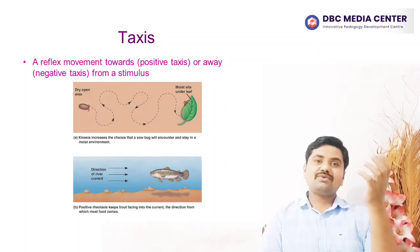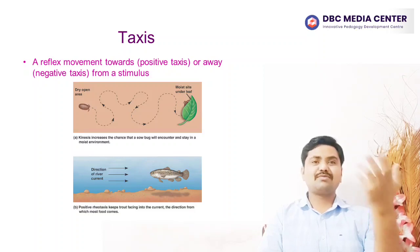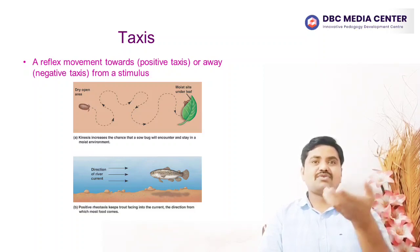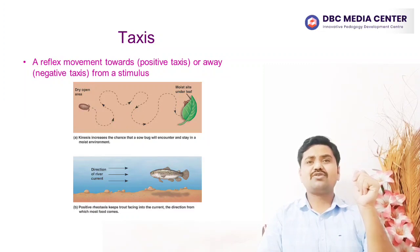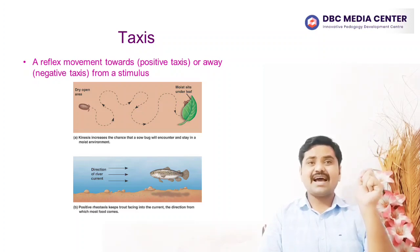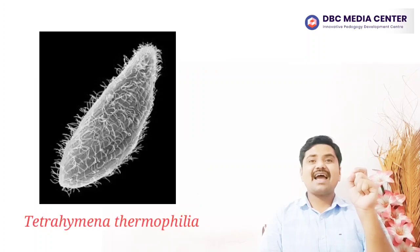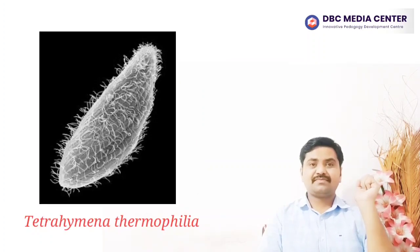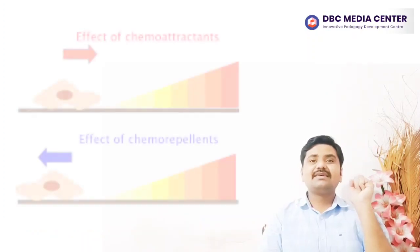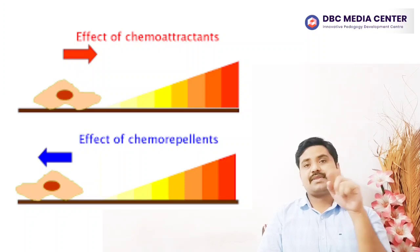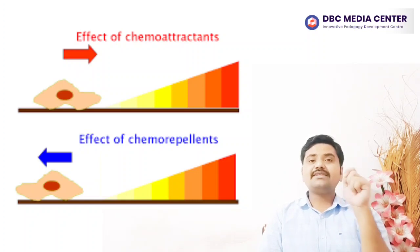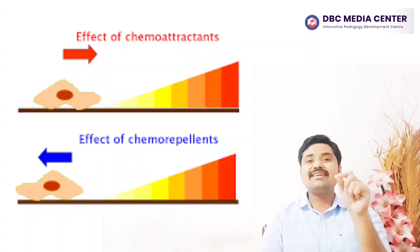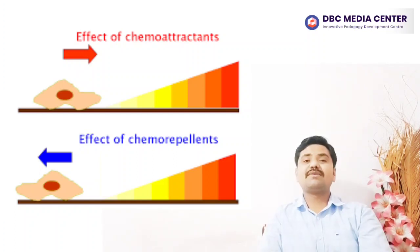An example of positive chemotaxis comes from the single-celled protozoan Tetrahymena thermophila. This organism swims using hair-like projections called cilia, sometimes moving in a straight line and at other times making turns. When it senses an attractive chemical, Tetrahymena decreases the frequency of its turns. The turns get rarer and rarer as the concentration of the chemical increases, and this pattern causes the organism to move in an increasingly straight line up the concentration gradient of the chemical toward its source.